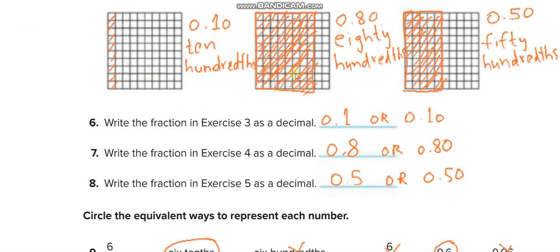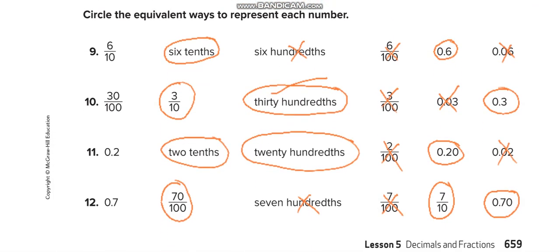Here they are writing in Exercise 3, and also 4 and 5. Circle the equivalent ways to represent each number. Like 6 over 10 is equal to 6 tenths, not equal to 6 hundredths. Why? Because it is 6 over 100, which is wrong. It should be 60 over 100. 0.6 is correct. 0.06 is like 6 hundredths. Similarly, you will solve all these next questions by yourself and then match your answers through this video.